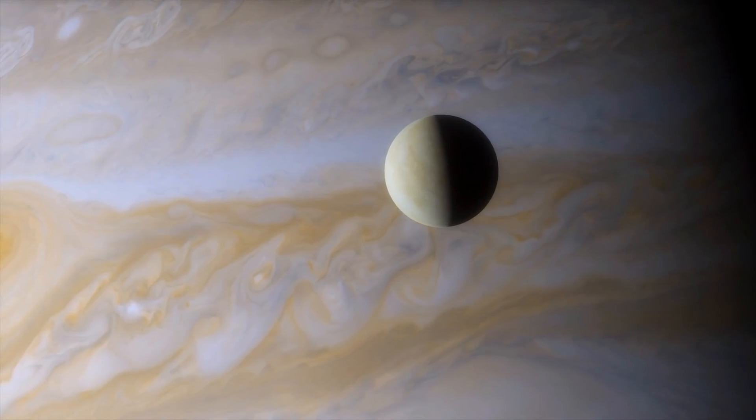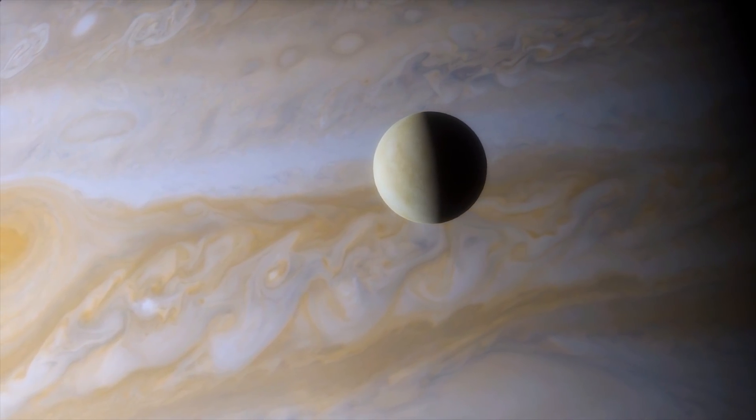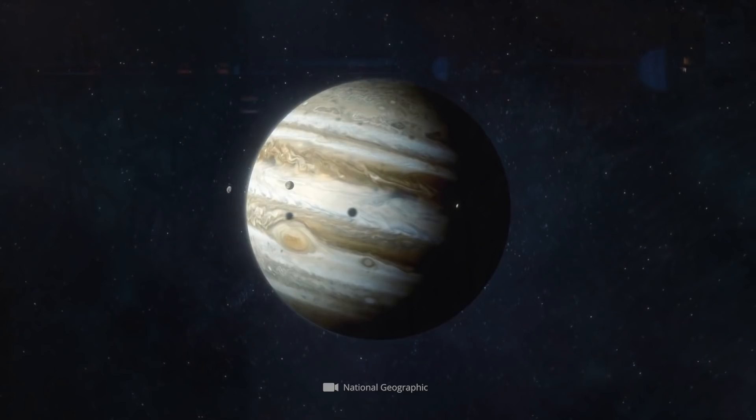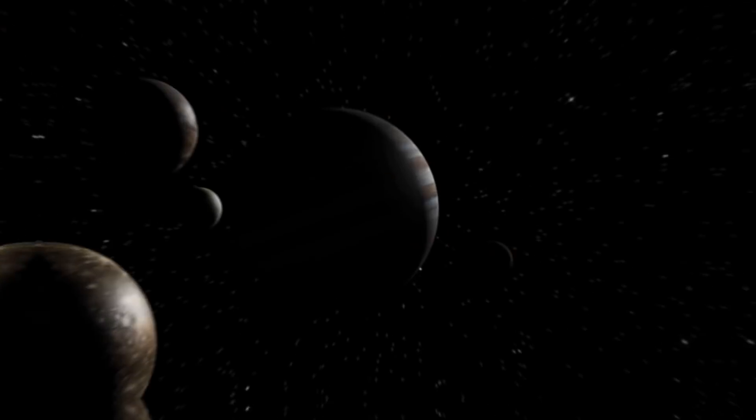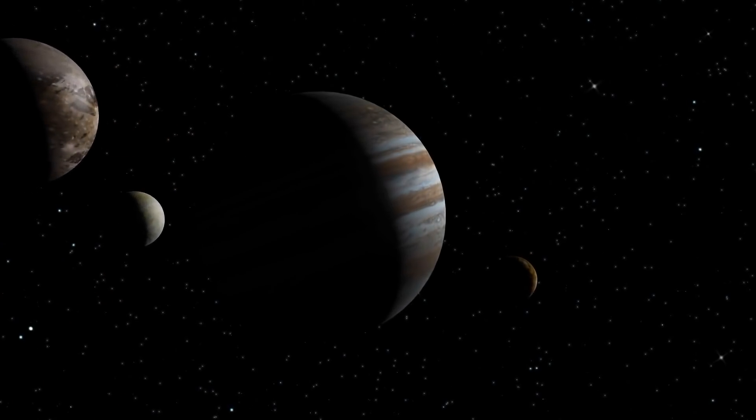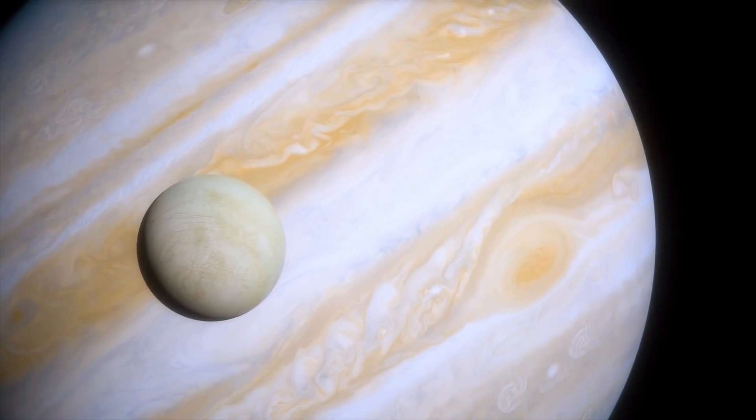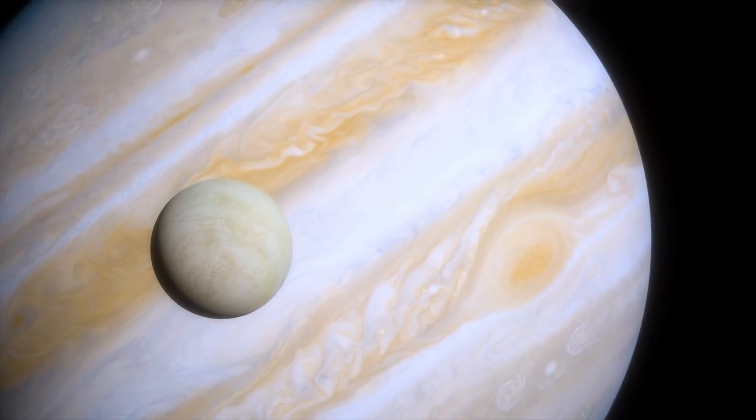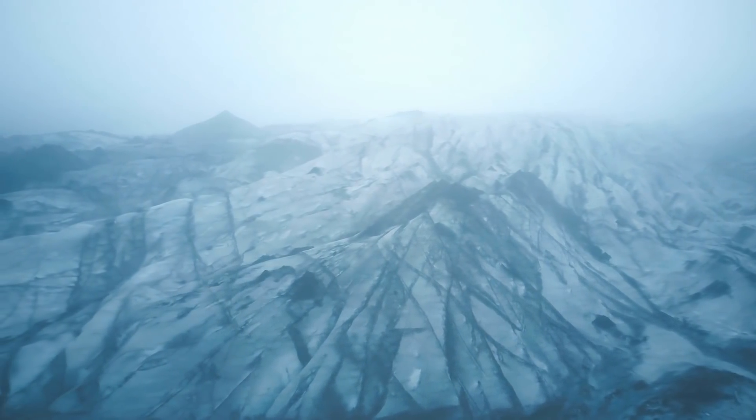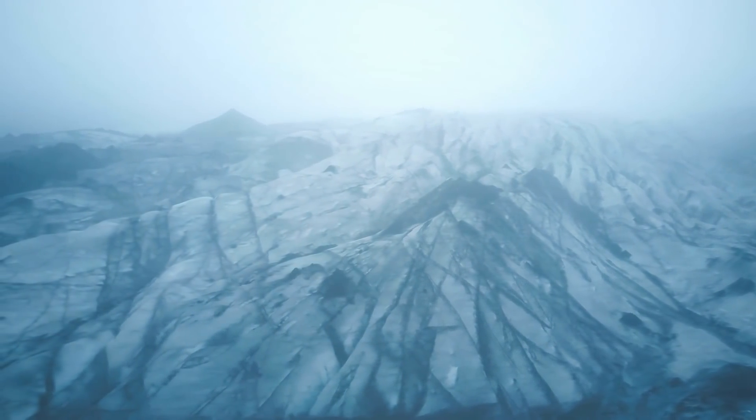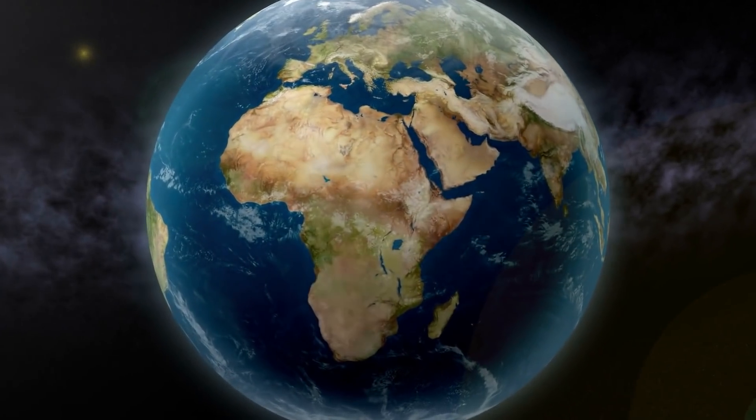As Jupiter's second innermost moon, Europa takes about 3 days and 14 minutes to completely orbit the largest representative of the planetary system. Just like the other inner moons of Jupiter, Europa always shows one and the same side to its galactic fixed point. In total, the moon's icy exterior covers an area of more than 18 million square miles, roughly the size of the African continent.